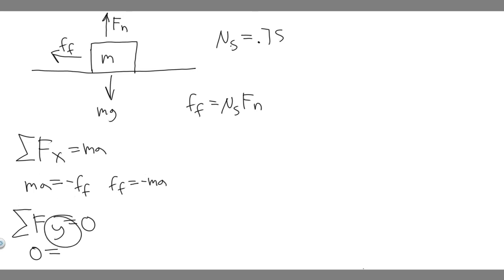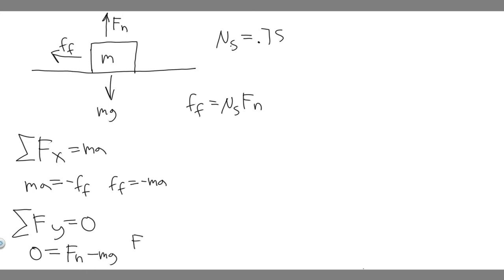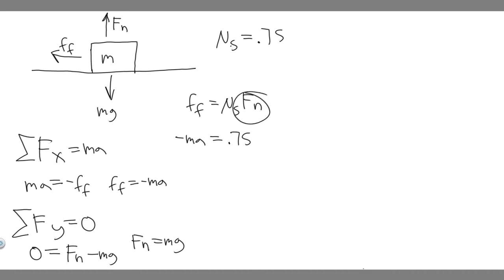In the y direction, we have f sub n and mg. Since f sub n is going upwards it's positive, and minus mg because it's going down. So f sub n equals mg. Now we can plug these in and solve for a. Plugging in minus ma for the force of friction, mu sub s which is 0.75, times f sub n which is mg.